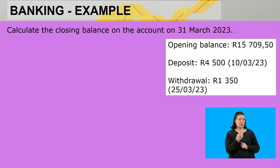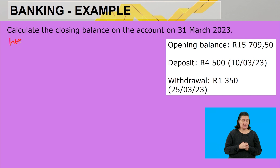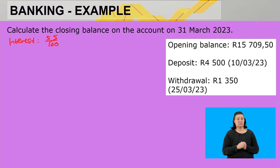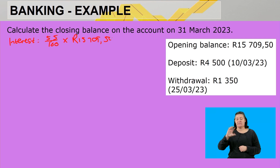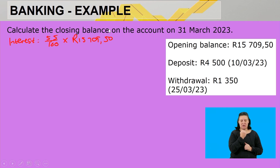First, it's important to note that the interest per year is 5.5 percent, compounded monthly. The opening balance is fifteen thousand seven hundred and nine rand and fifty cents, and it remains the same balance for a period of ten days. So I divide by 365 and multiply by the 10 days on the balance of R15,709.50.